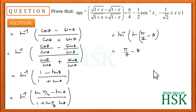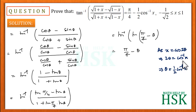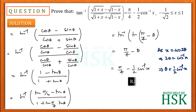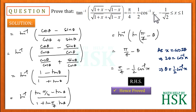Since we took x equal to cos 2 theta, this means 2 theta equals cos inverse x, or theta equals 1 by 2 cos inverse of x. Therefore, pi by 4 minus theta equals pi by 4 minus 1 by 2 cos inverse of x, which is the right hand side. This proves that tan inverse of the given expression equals pi by 4 minus 1 by 2 cos inverse of x.